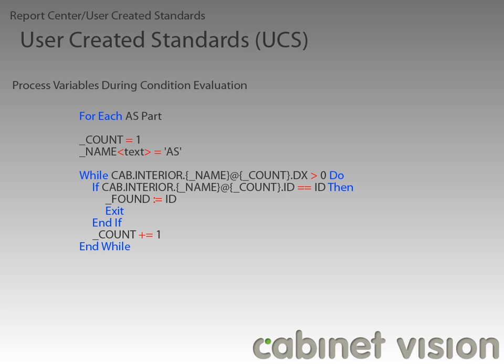The first thing we will look at is the For Each statement. This line is telling us that the UCS should only apply to AS, or adjustable shelf, parts. Next, we're going to look at the variable declarations. In this UCS, we are creating two variables: underscore count and underscore name. Underscore count is a generic variable that can hold any data type, while the underscore name variable is a text variable.